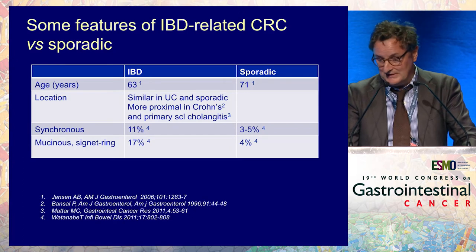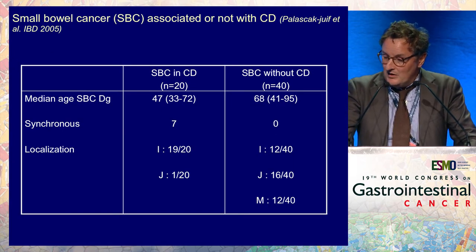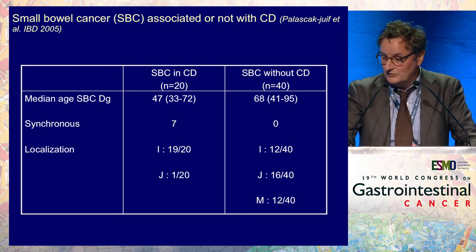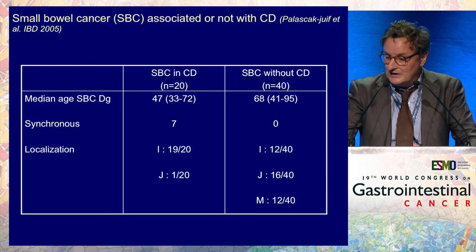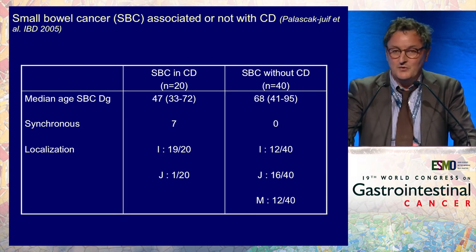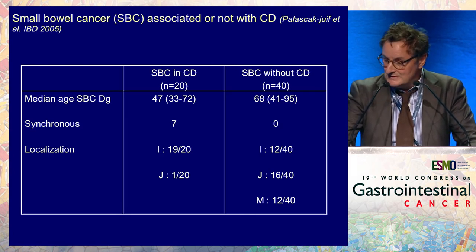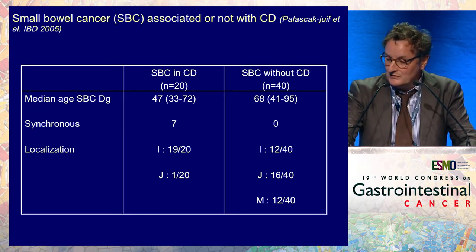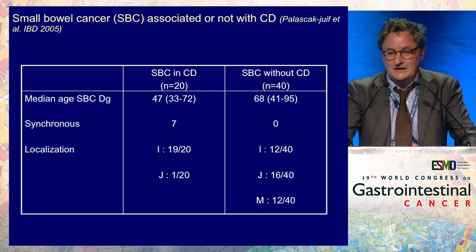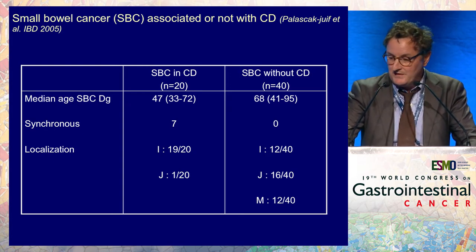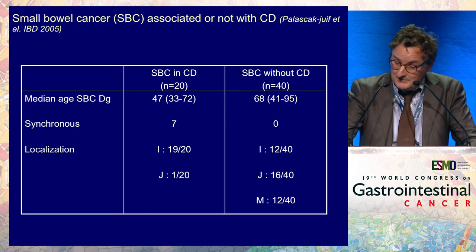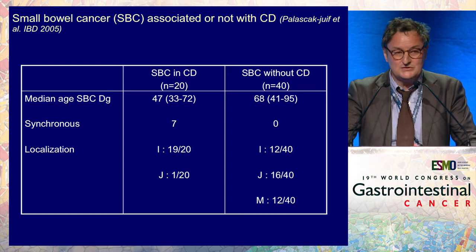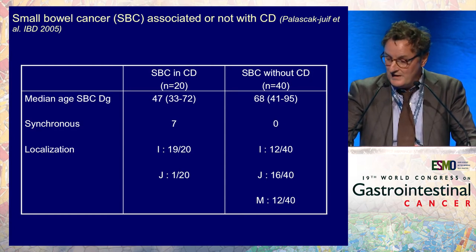Similar conclusions have been made about small bowel cancer associated or not with Crohn's disease. The median age is lower in small bowel cancer associated with Crohn's disease; it is more often synchronous. Most importantly, small bowel cancer associated with Crohn's disease is generally located within the inflamed epithelium in the ileum, whereas it is more evenly distributed along the small bowel in patients without Crohn's disease.